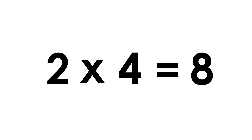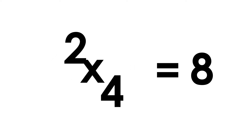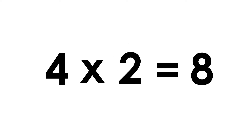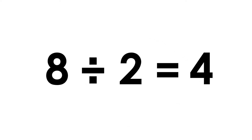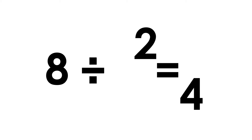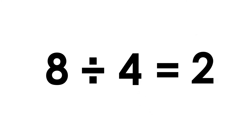Two fours are eight. Four twos are eight. Eight divided by two is four. Eight divided by four is two.